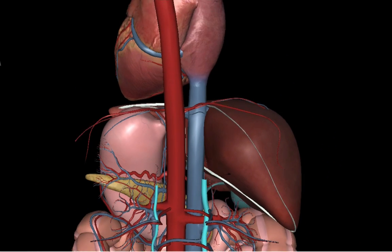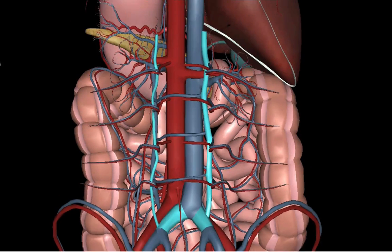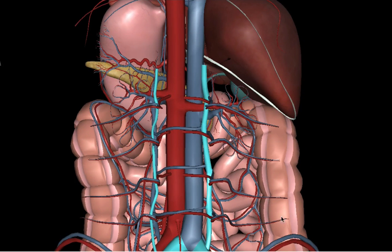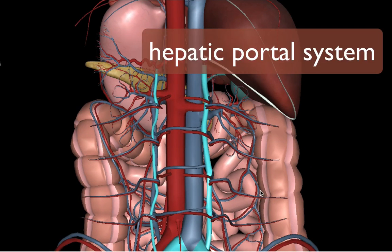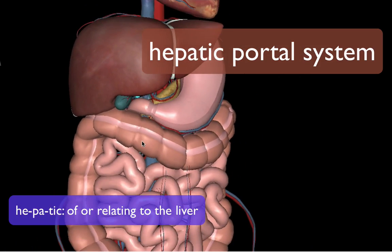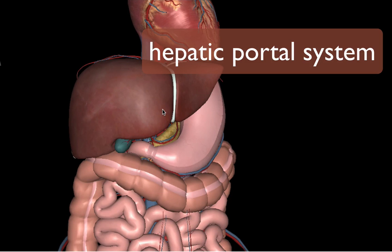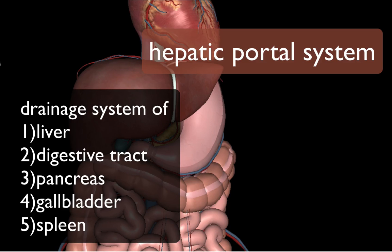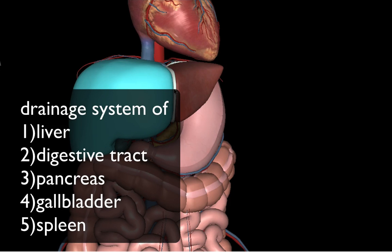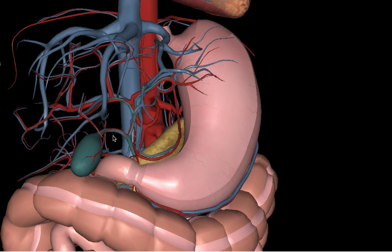Now we're going to take a look at the hepatic portal system — hepatic meaning having to do with the liver. We're going to zero in on the liver a little bit and take a look at the venous system that runs within it. We're going to remove the liver to get a better view.